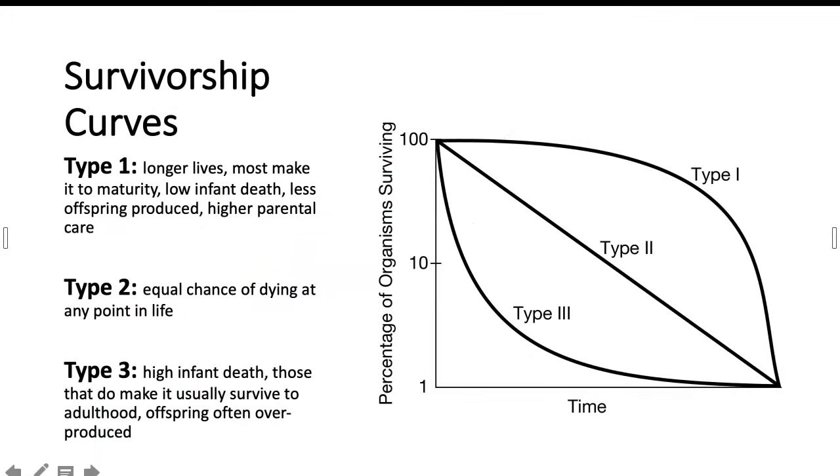You're definitely going to need to know survivorship curves, and they will likely be labeled type 1, type 2, and type 3. And you'll need to be able to identify characteristics based on those particular types. For example, your type 1 curve, which is usually your top one on your graphic, is going to show a lifespan where most individuals, if you follow the pink line there, are going to live to usually a kind of maximum critical life point, so kind of where I put the little star.